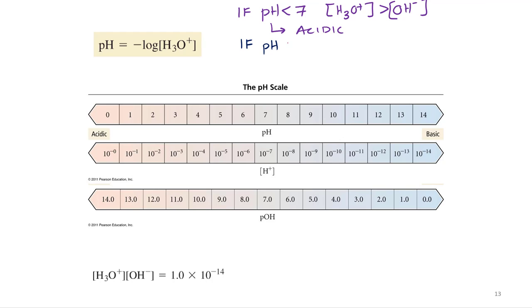If pH is greater than 7, it's basic, and what that means is we've got more hydroxide in solution than H3O+.